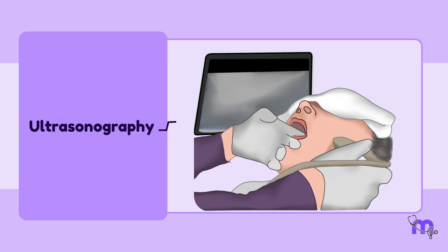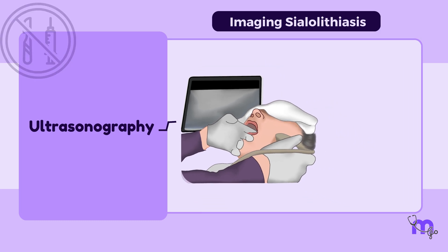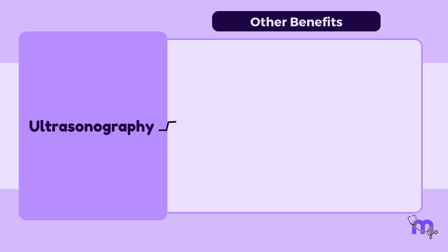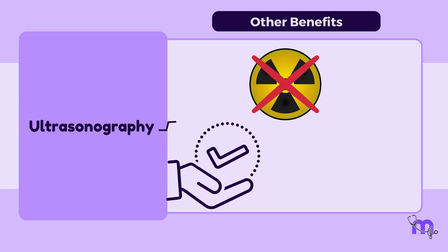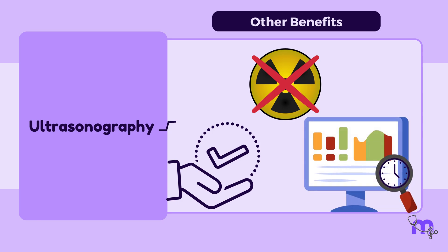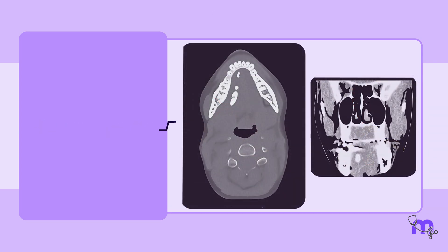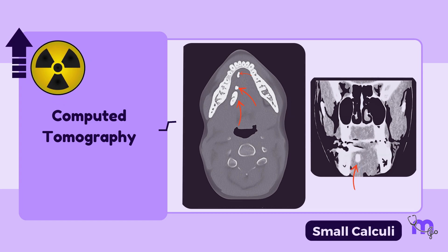Ultrasonography is a non-invasive method of imaging sialolithiasis. It is less expensive than most other imaging modalities, with additional benefits including no radiation exposure, real-time image interpretation, and widespread availability. However, ultrasound may not be able to show the exact number of sialoliths present, particularly those smaller than 2 mm. To overcome this, computed tomography can identify small calculi, but at the expense of high radiation exposure.